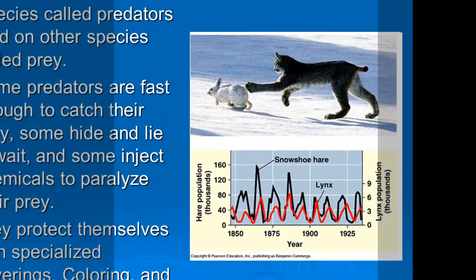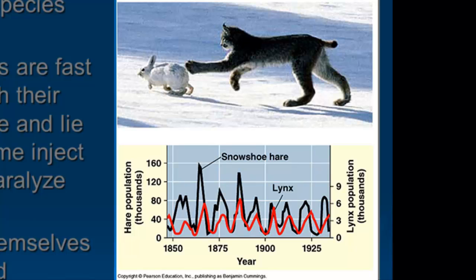When we look at a graph that shows an interaction between predator and prey, we see a common interaction. With a predator-prey interaction, the predator population numbers are always going to follow the prey population numbers. As the prey go up in population, then the predator numbers will follow. When the prey numbers fall, then the predator numbers will follow. When you see almost an overlapping interaction between populations, you can almost infer that that's a predator-prey interaction.